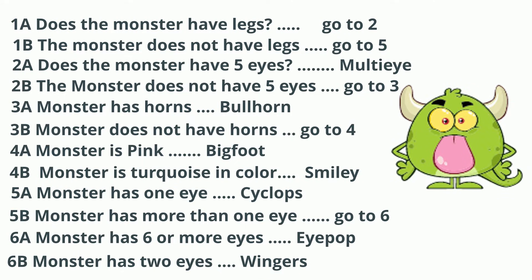Now let's move on to the next one. This guy has a green body and some horns. Remember, you always start at 1a: 'monster has legs' — yes, so go to 2.